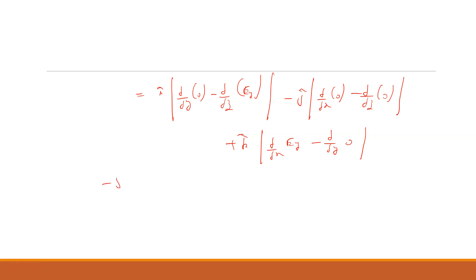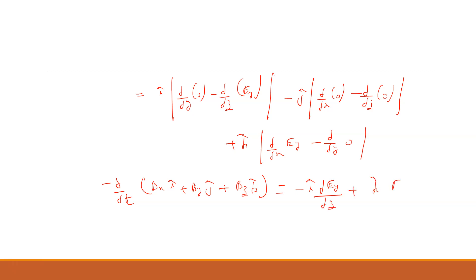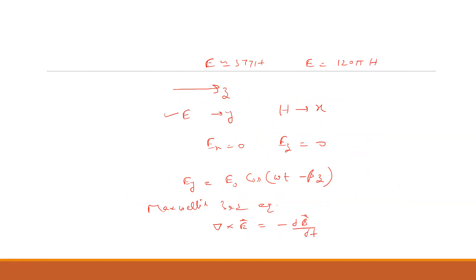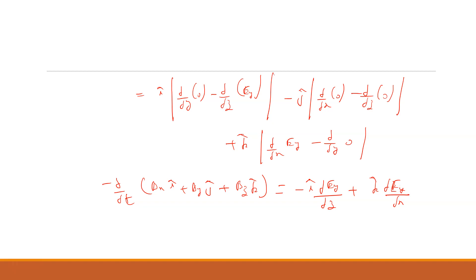So this becomes: −d/dt(BX î + BY ĵ + BZ k̂) equals −î(∂EY/∂z) + k̂(∂EY/∂x). Now put the value of EY from equation 1 into this equation, which we call equation 2.